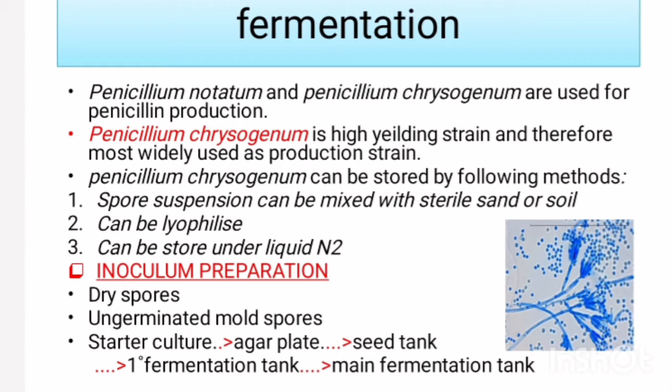For inoculum preparation, dry spores or ungerminated mold spores are used. Dry spores may be used to seed the fermentation medium. A starter culture is transferred to an agar-containing plate to allow growth. After growth on solid media, one or two growth stages are allowed in flasks to create the suspension. It is then transferred to a seed tank for an incubation period of 24 to 48 hours.